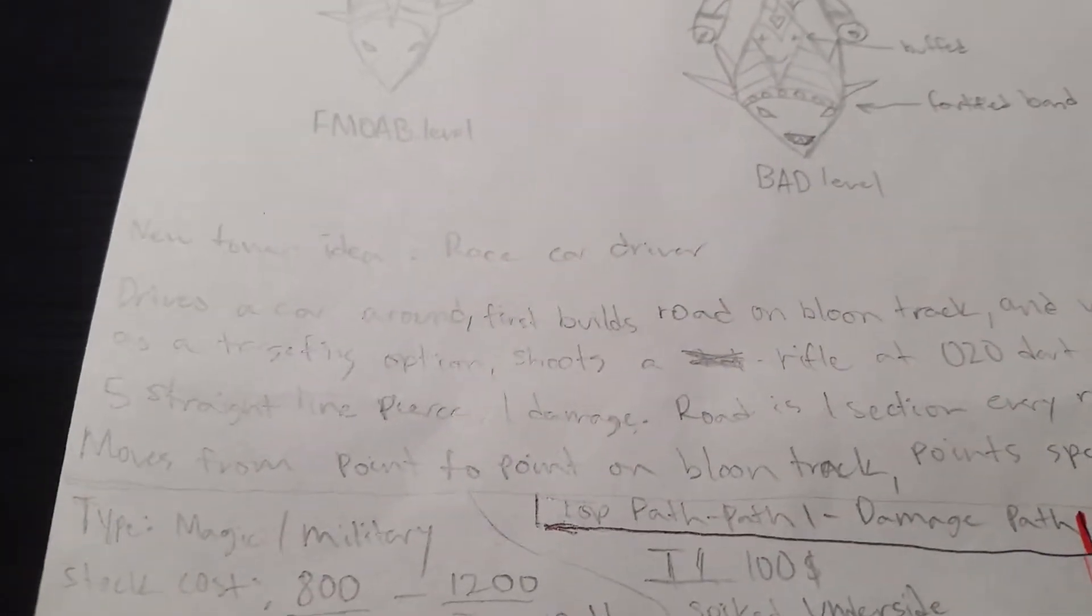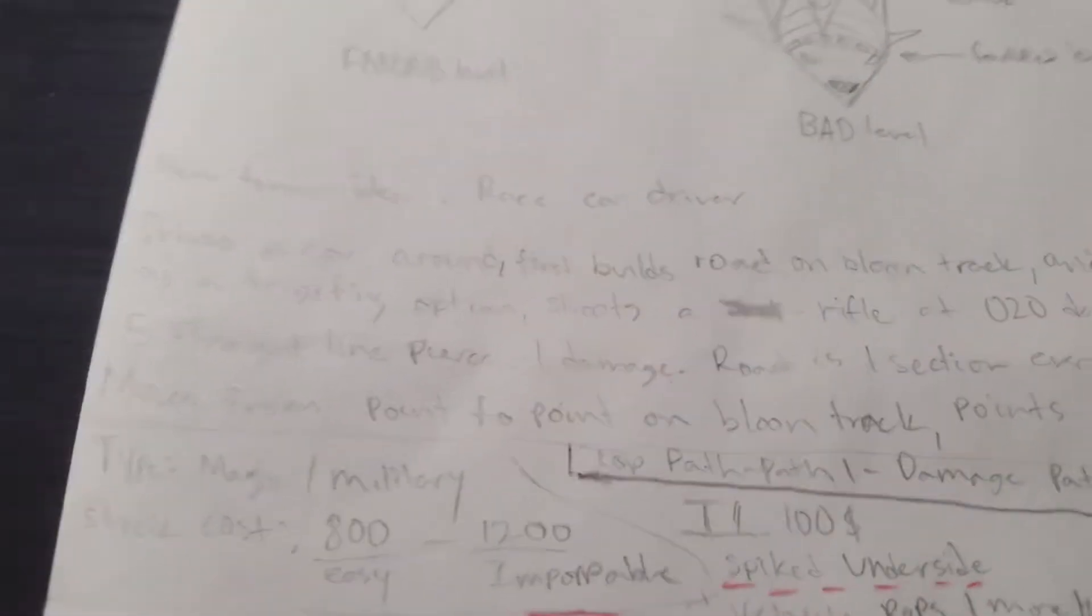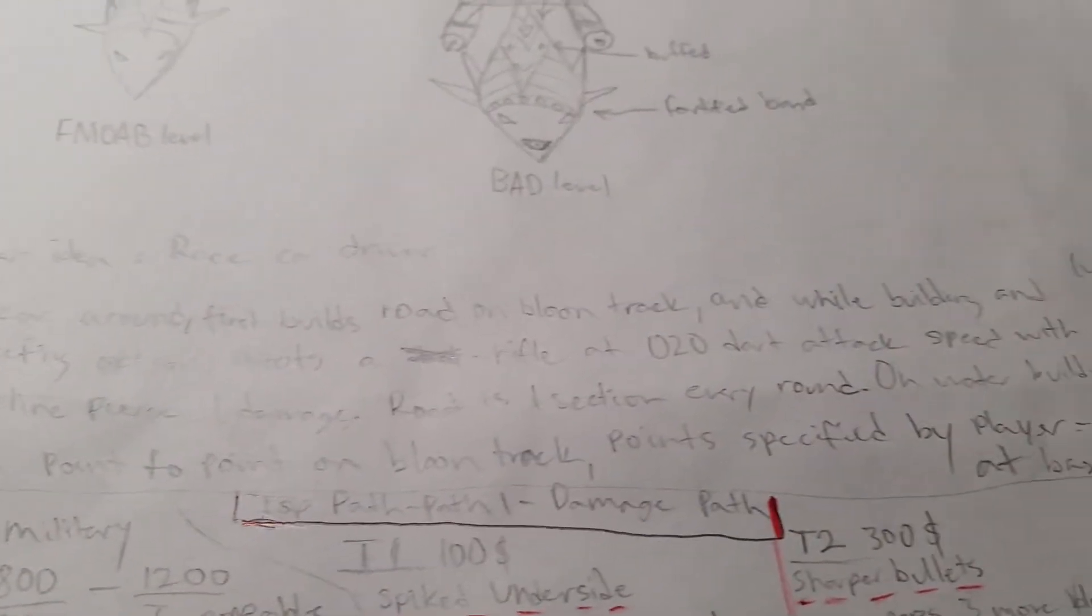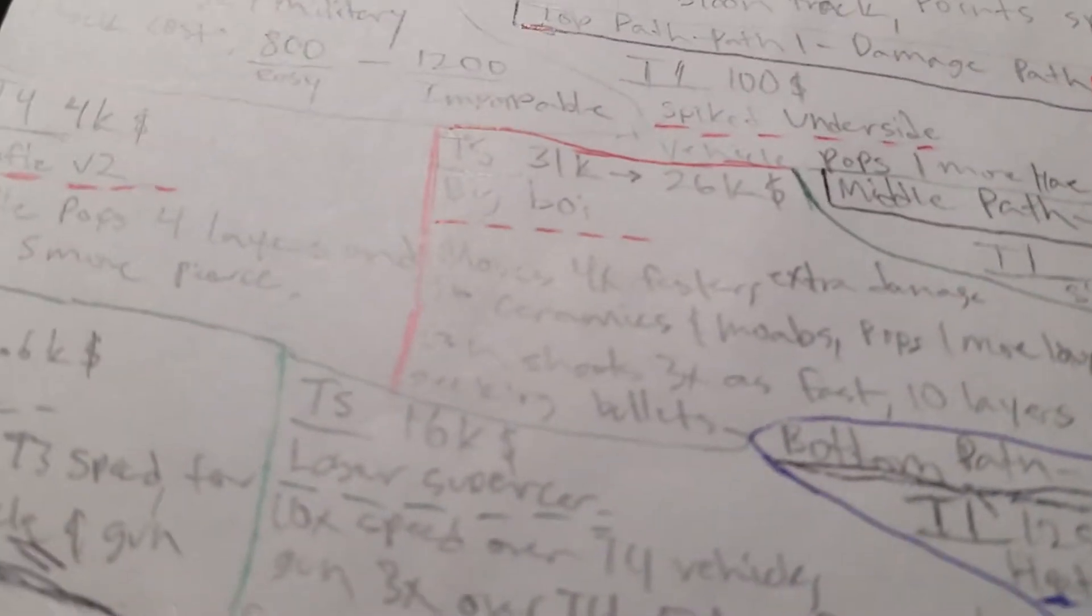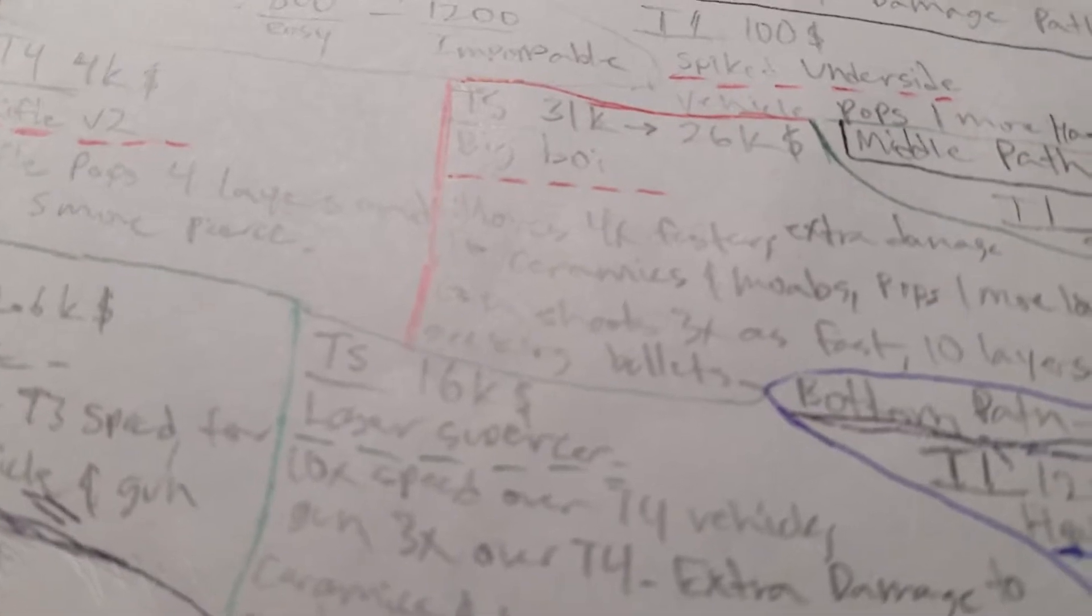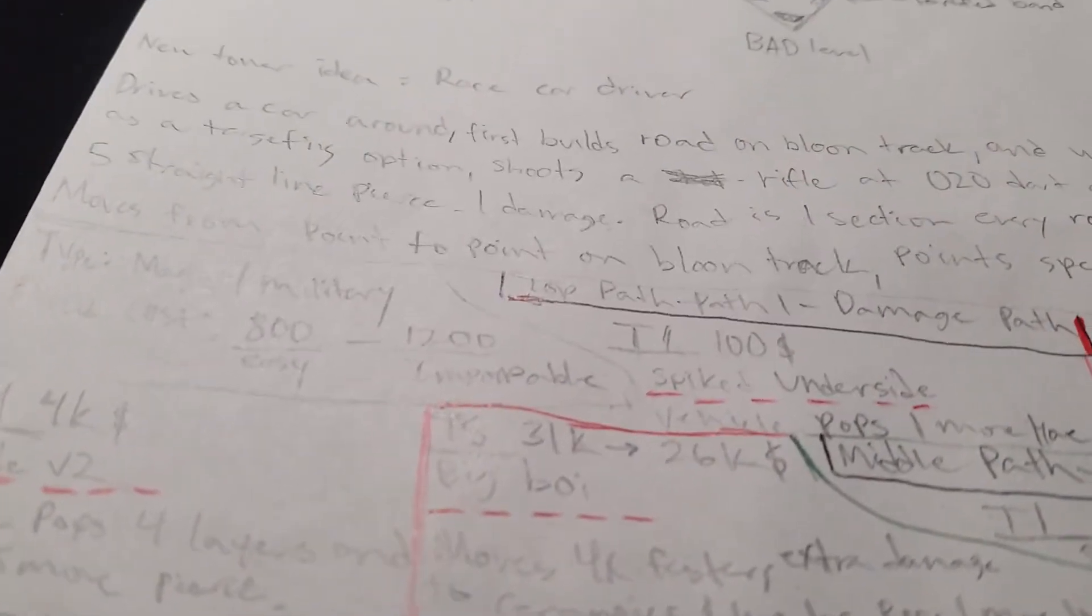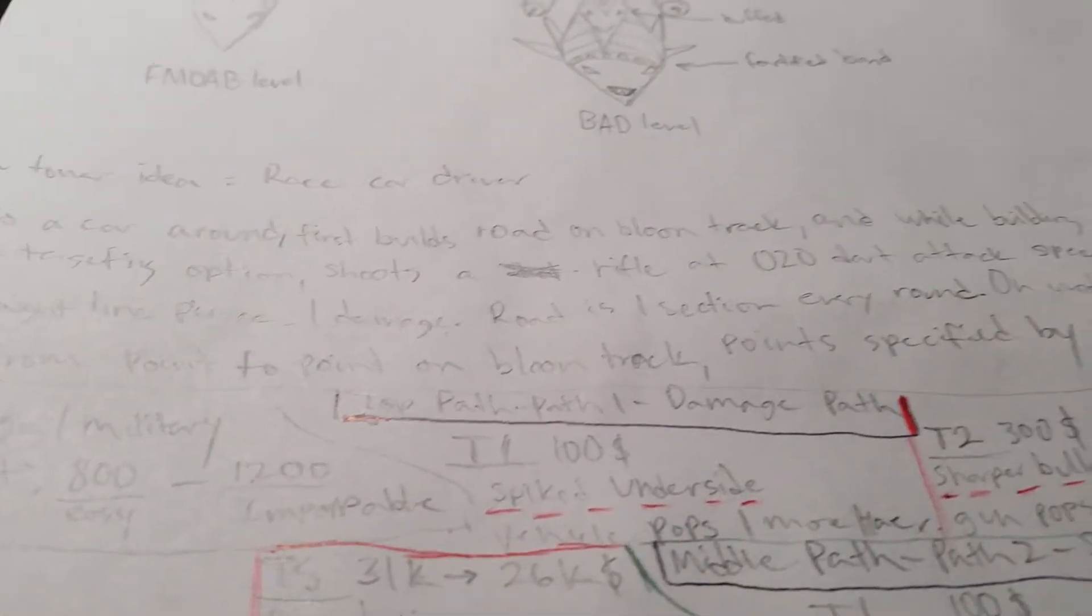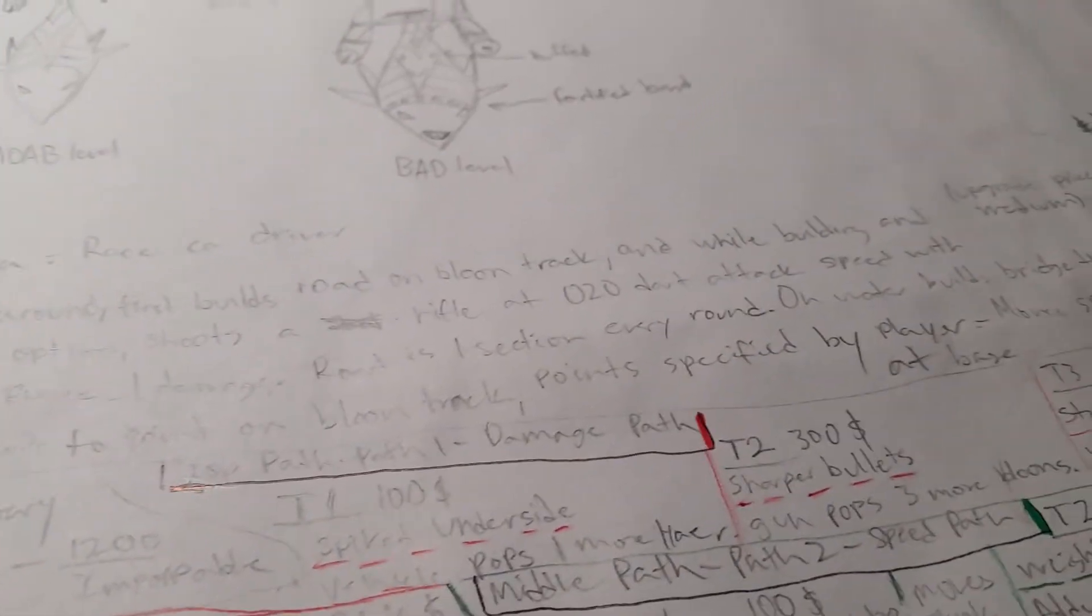Now we have the race car driver. So race car driver drives a car around. It first builds a road on balloon track, and as a targeting option. The tower, it will look like a monkey where you put the tower.